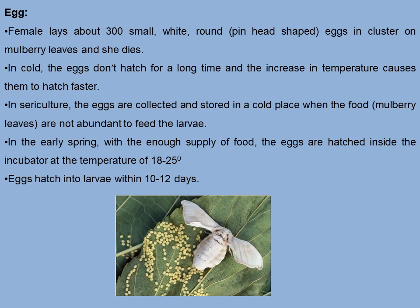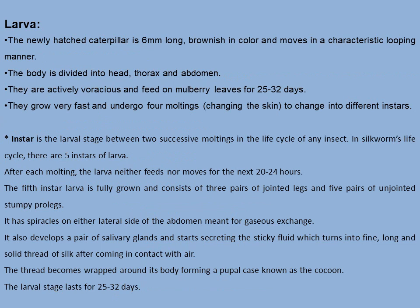The female lays about 300 small, white, rounded, pinhead-shaped eggs in clusters on mulberry leaves, and then she dies. You can see in the photograph the female laying its creamy white eggs, after which she dies. In cold conditions, the eggs do not hatch for a long time; an increase in temperature causes them to hatch faster. In sericulture, eggs are collected and stored in a cold place when mulberry leaves are not abundant. With enough supply of food, eggs are hatched inside an incubator at a temperature of 18 to 25 degrees Celsius.